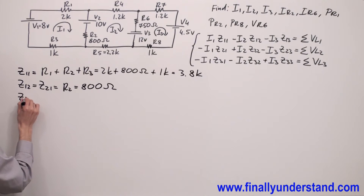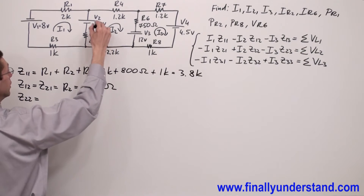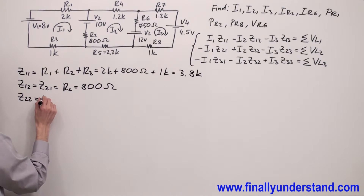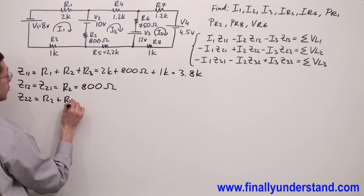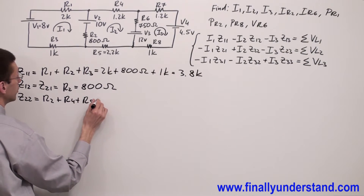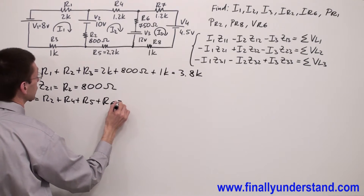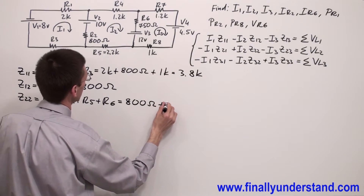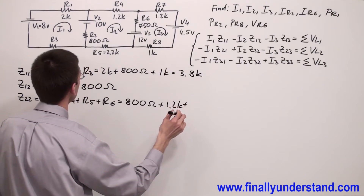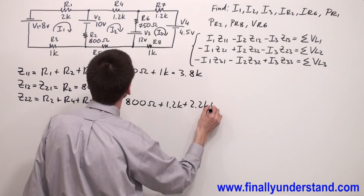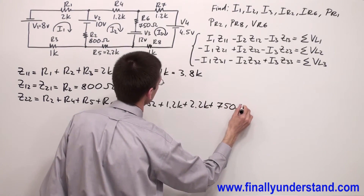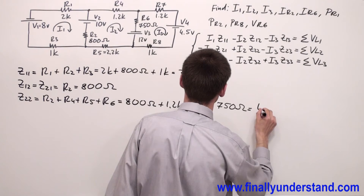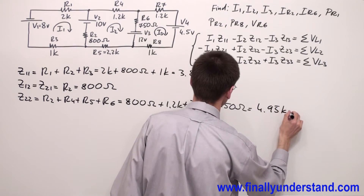Next I have to find Z22. Z22 is the sum of the impedances — in this case resistances — in loop 2. So Z22 is going to be R2 plus R4 plus R5 plus R6, which equals 800 ohms plus 1.2 kilo plus 2.2 kilo plus 750 ohms. Z22 is equal to 4.95 kilo ohms.